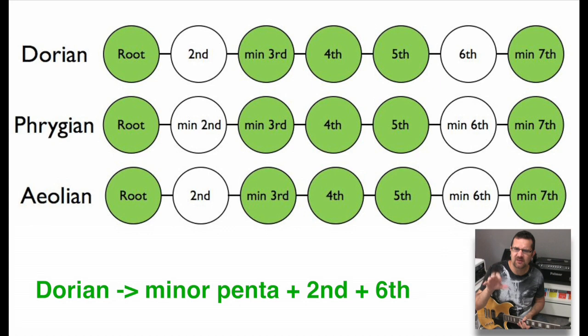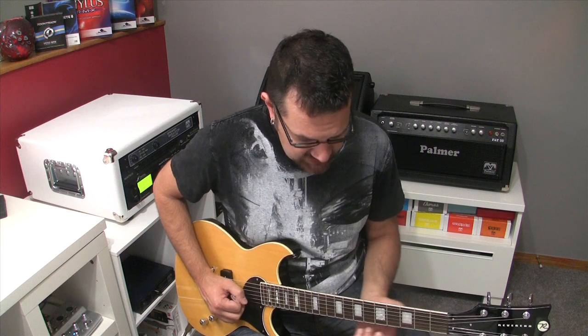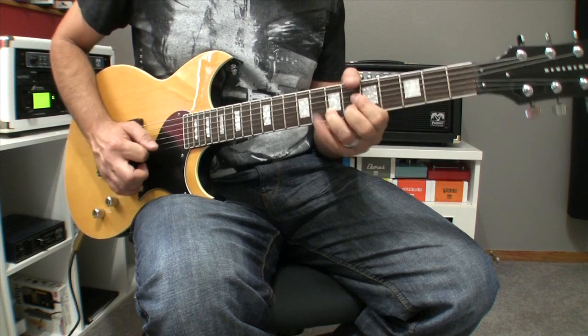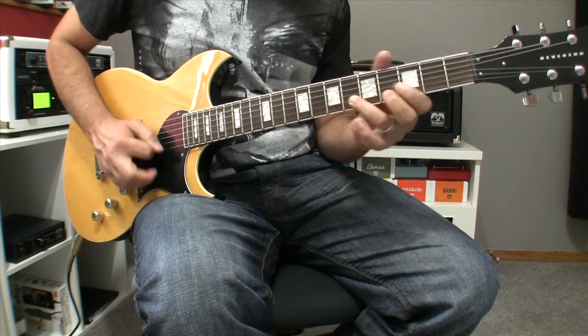How do I speak the Dorian language? Just by thinking basic alphabet — minor pentatonic scale — and adding these two additional letters: major second and major sixth. Why not play your favorite minor pentatonic lick and land on one of these notes? For example, target the major second, found on the first string, seventh fret. Or land on the major sixth, found on the second string, seventh fret. A minor pentatonic landing on that note — and I'm speaking the Dorian language.